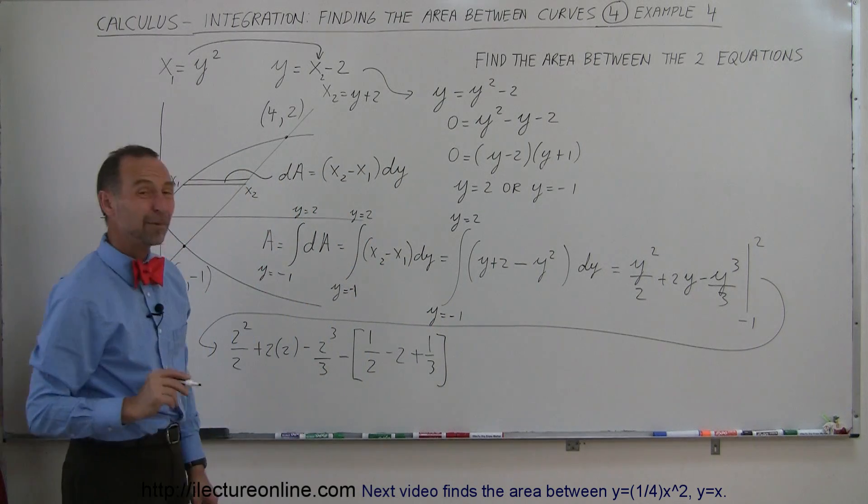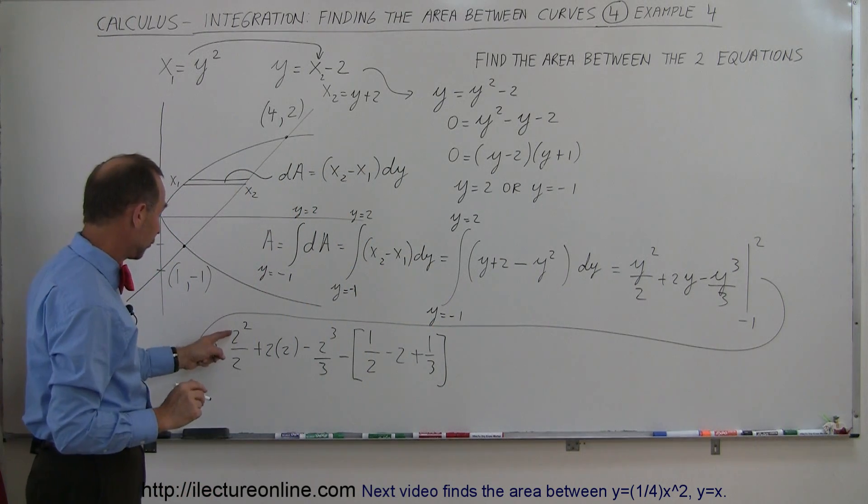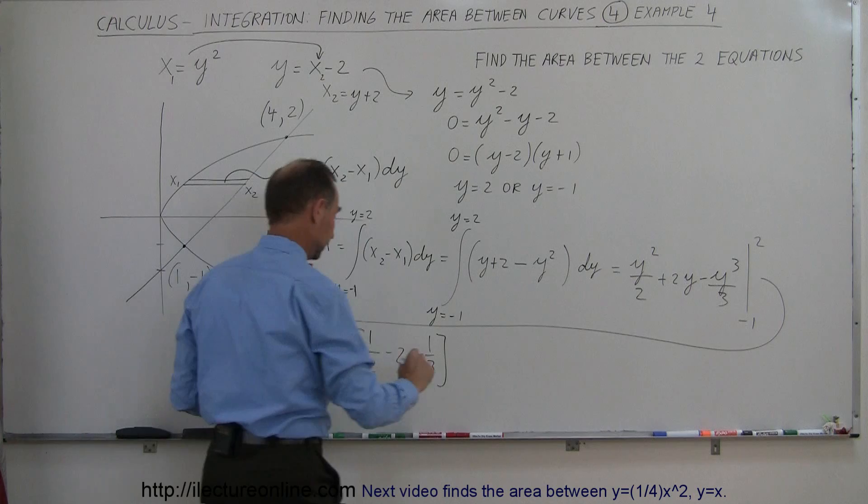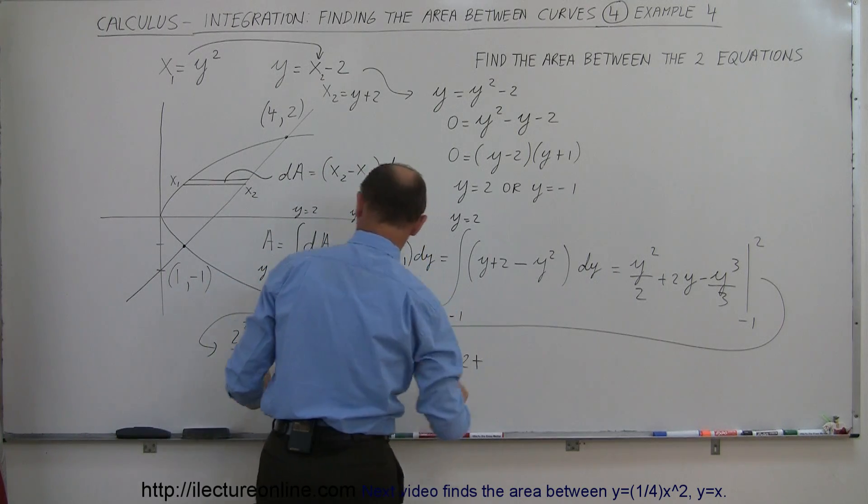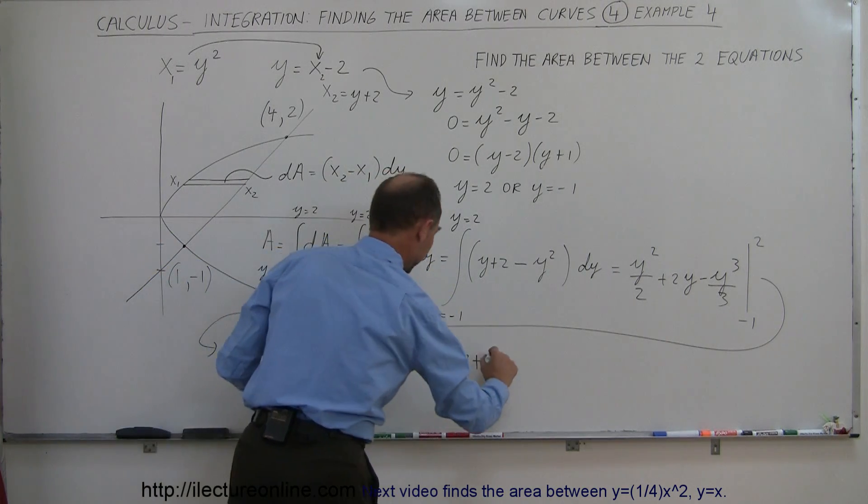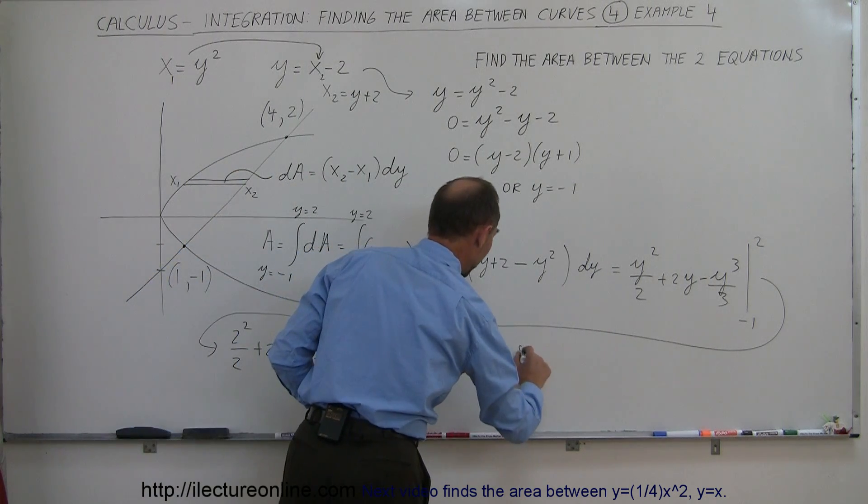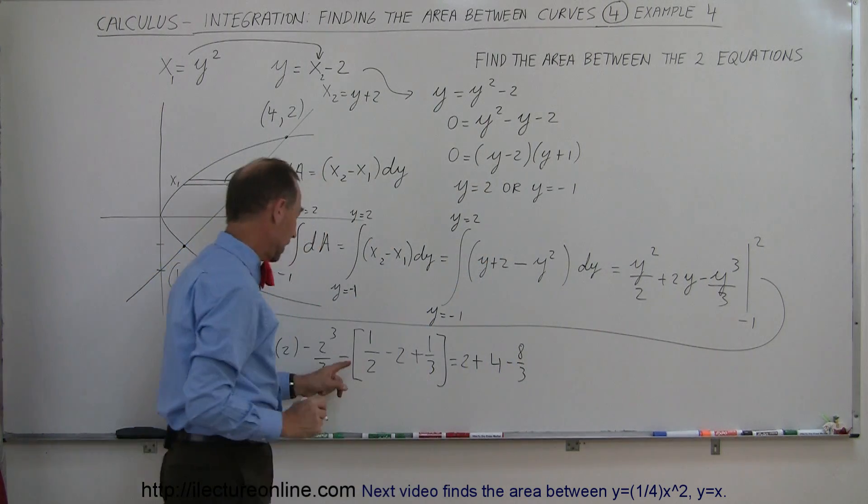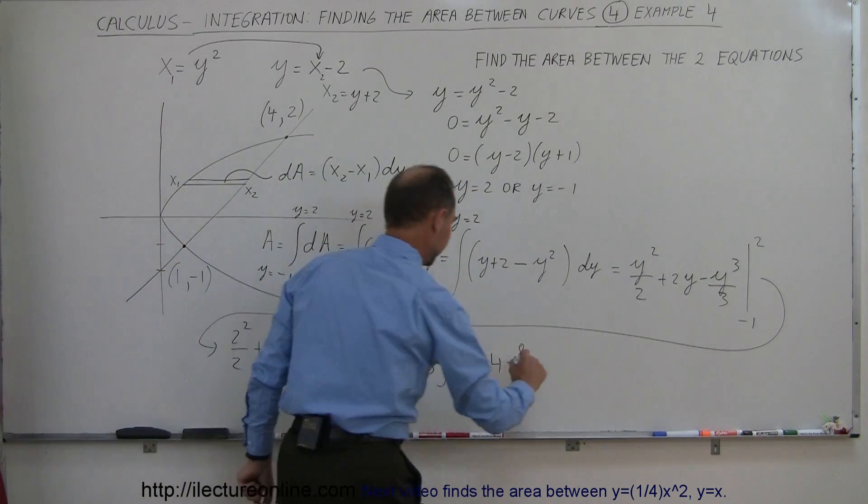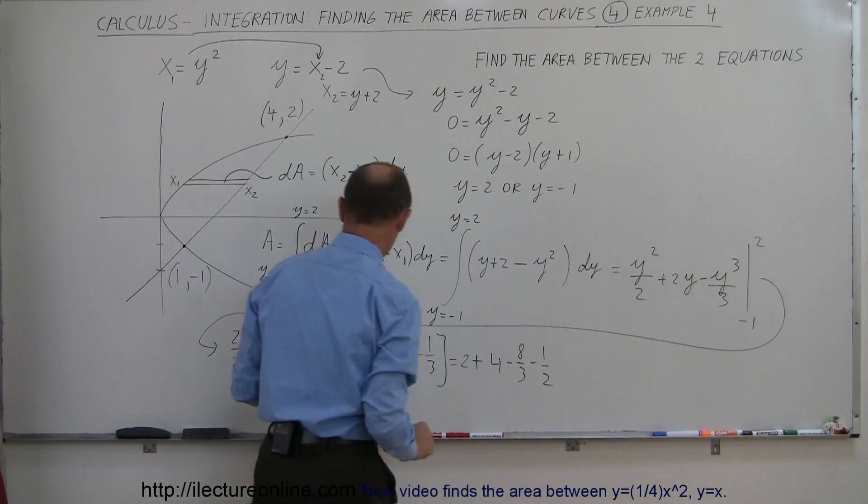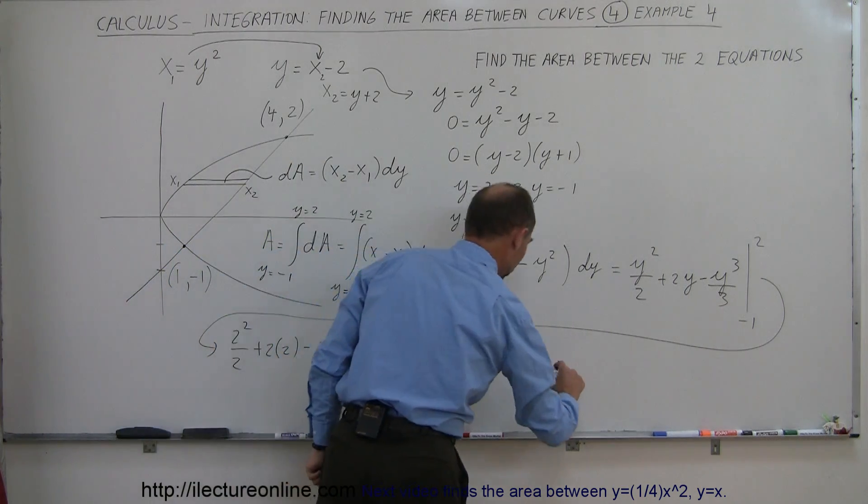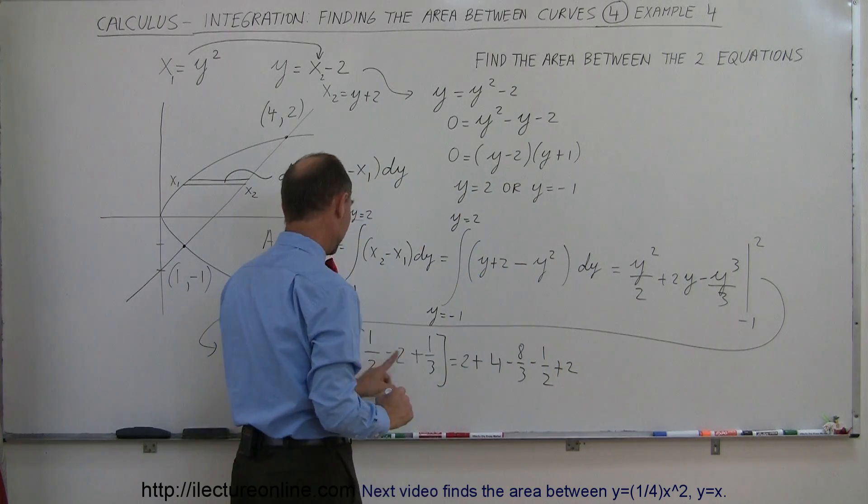Okay, so simplifying that a little bit more, I get 4 divided by 2, which is 2, plus 2 times 2, which is 4, and minus 2 cubed divided by 3, which would be minus 8 over 3. And over here, minus 1 half. I have minus times the minus, which is a plus 2, and minus 1 third.